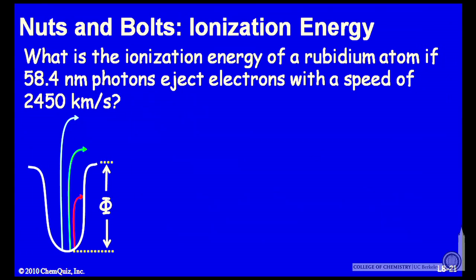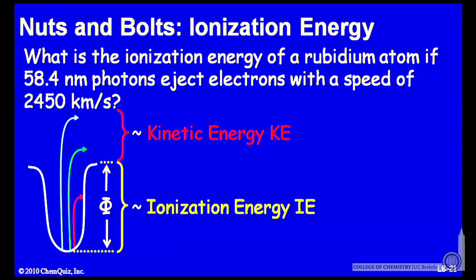It looks kind of like this. The electrons are trapped in a well, and you have to ionize them. And then any additional energy will be kinetic energy. These two energies together make up the photon energy that the system experiences.